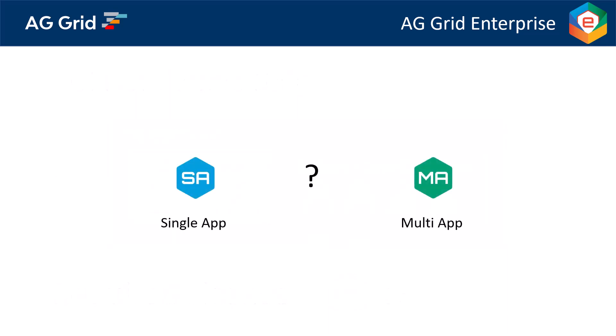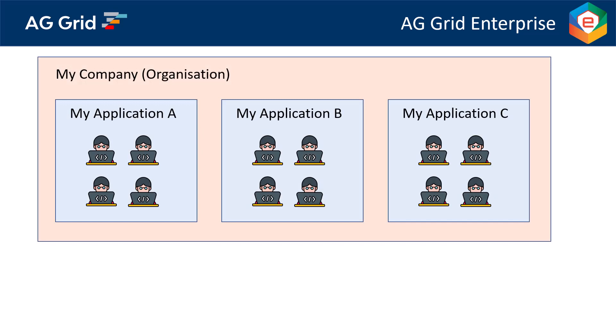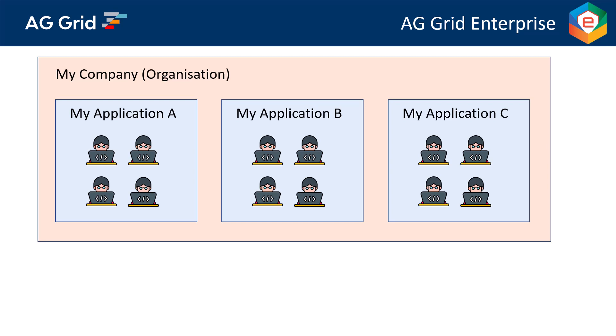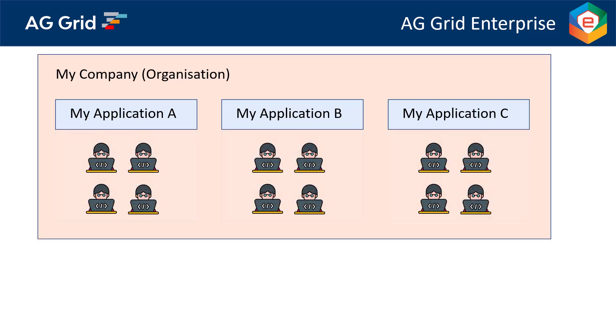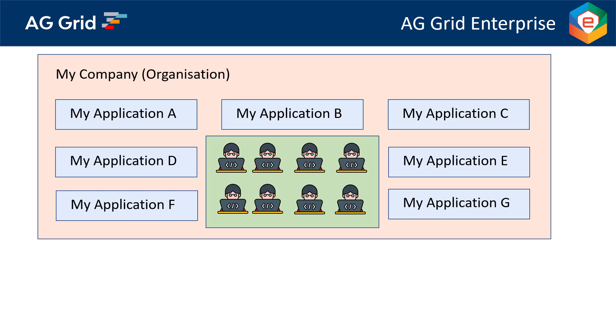So far we've considered building just one application, but what if you have more than one? If you have many applications and want to license them all individually with single-app licenses, that's totally fine. However, you also have the option to use a multi-app license. For a multi-app license, you don't license the applications individually — rather, you license the group of developers. Then the group of developers can work on an unlimited number of applications using AG Grid Enterprise.